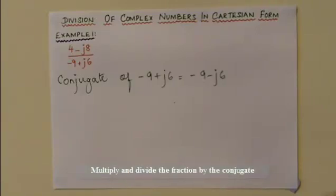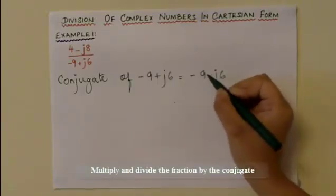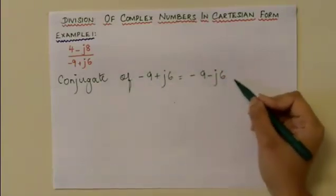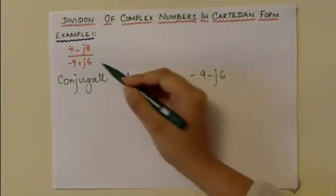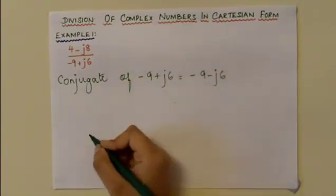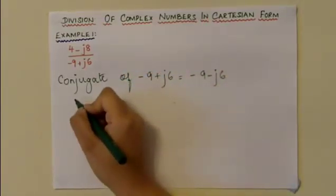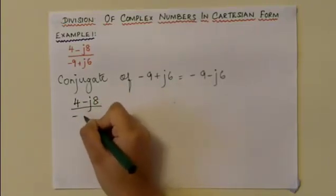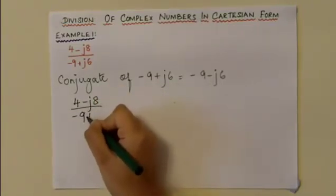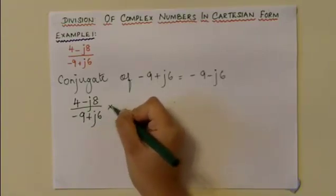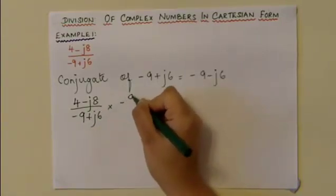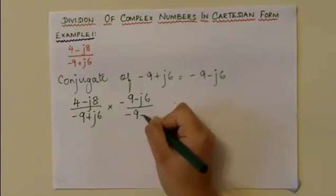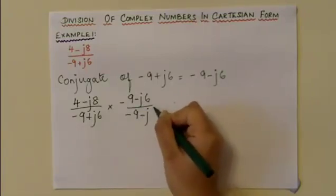Then you multiply and divide the fraction by the conjugate of the denominator. Therefore, you have (4 - j8) / (-9 + j6) times (-9 - j6) / (-9 - j6).